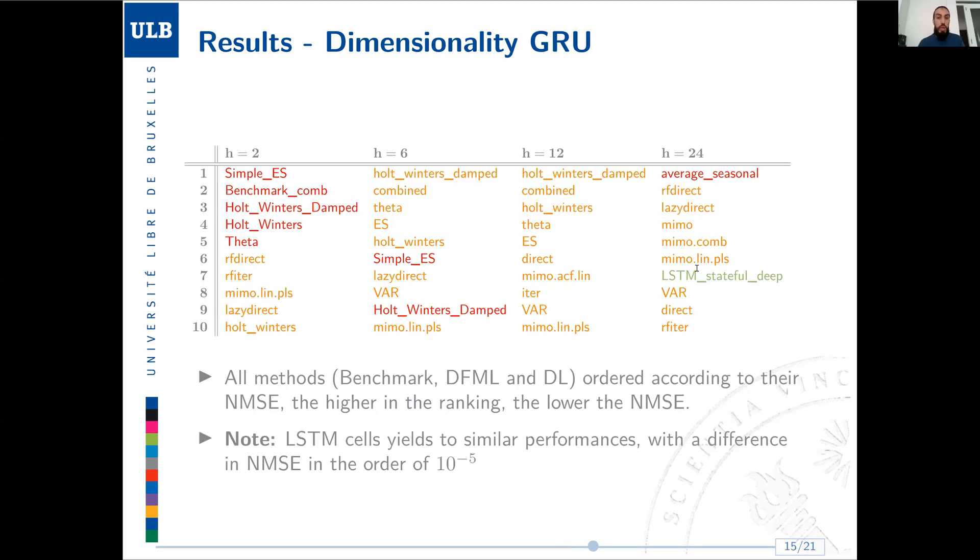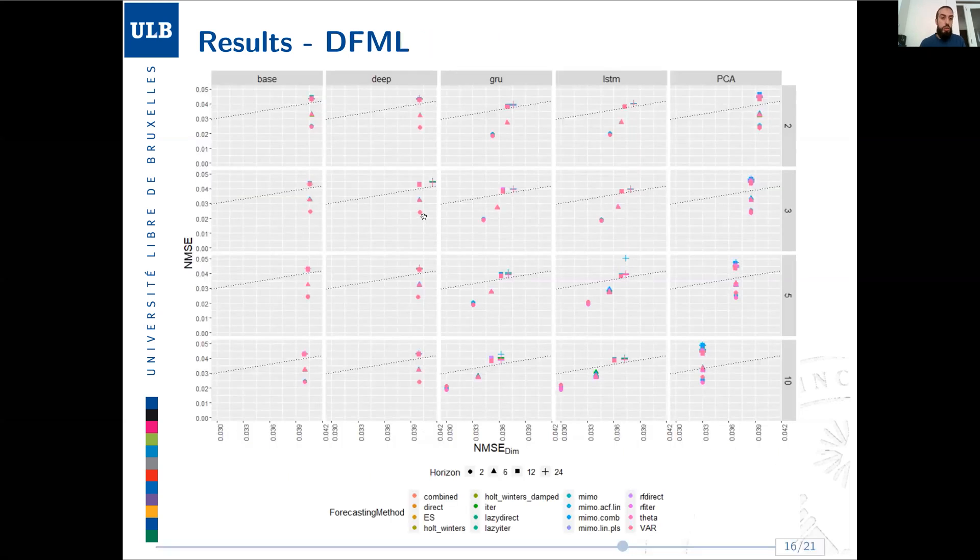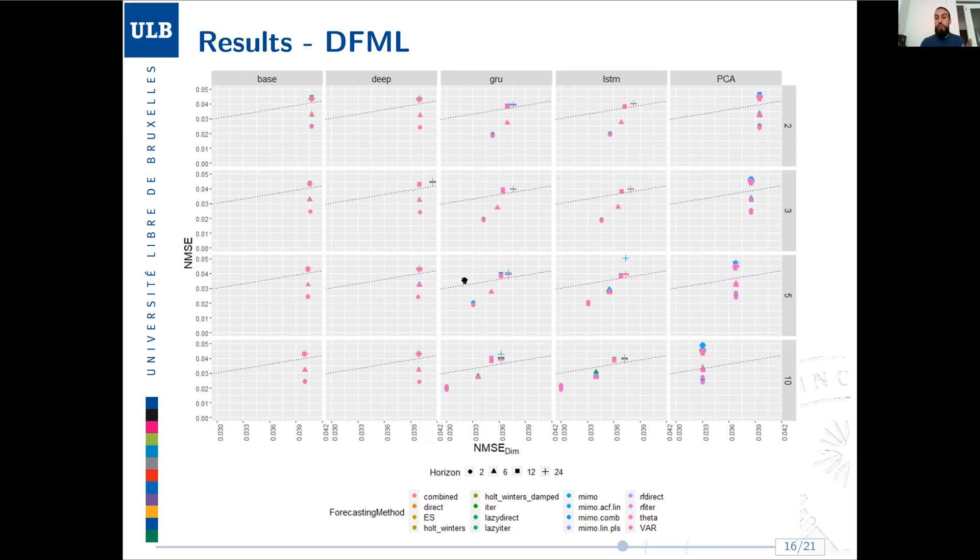But if we try to change the same setup, but instead of using PCA as dimensionality reduction, we use GRU, a recurrent neural network based dimensionality reduction. We can see that for shorter horizons, H equal to 2, univariate methods are still doing better. But for all the other horizons, we can see that the methods that are here in orange for the DFML method and red for the benchmark method, green for the deep learning one, we are having better performance and we get on top of the ranking these extended DFML methods based on neural dimensionality reduction. LSTM cells perform as well as GRU, but here we decided for the sake of presentation time to present only the GRU one.